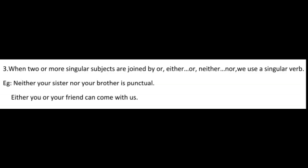Third rule: When two or more singular subjects are joined by 'or,' 'either...or,' or 'neither...nor,' we use a singular verb. Examples: 'Neither your sister nor your brother is punctual.' 'Either you or your friend can come with us.' When we see 'neither...nor' or 'either...or,' we use only a singular verb.